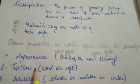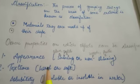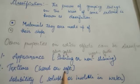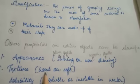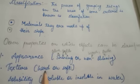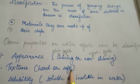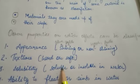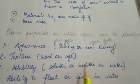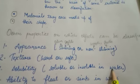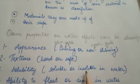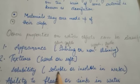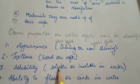The second one is texture — that is, joh aapka material hai, woh hard hai ya soft hai. Like iron is hard, and rubber is a soft material. The third is solubility — soluble or insoluble in water. For example, sand is insoluble in water and salt is soluble in water.